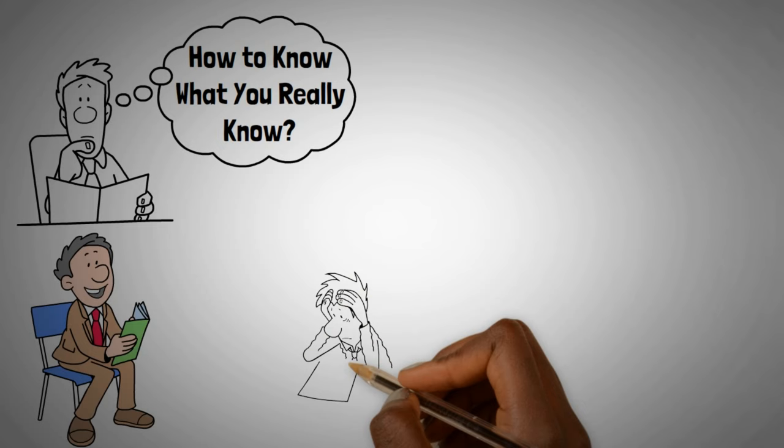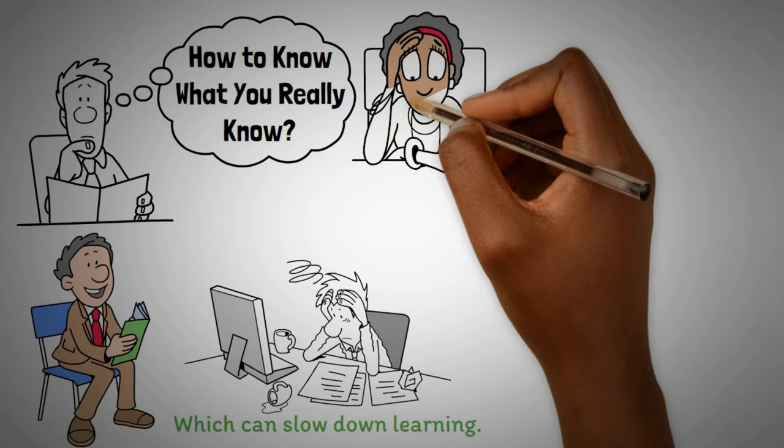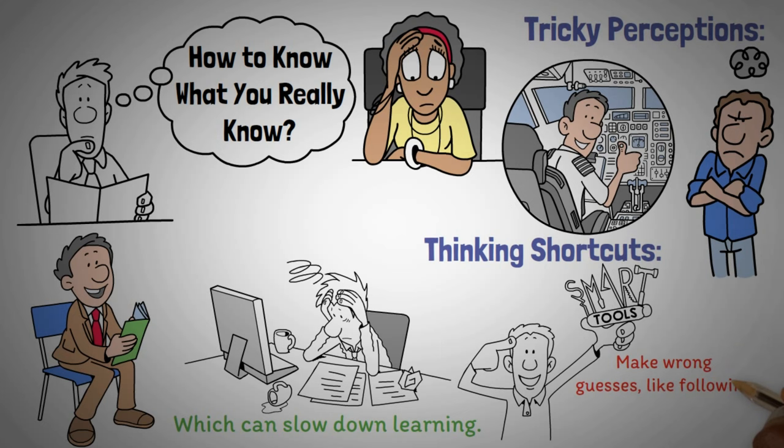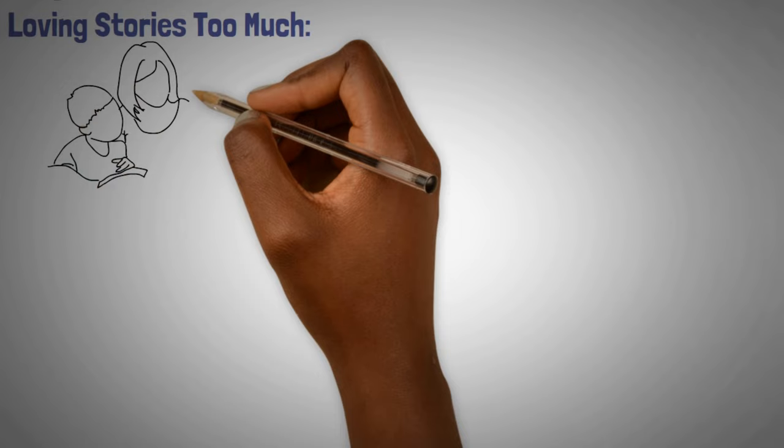Understanding what you know and what you need to work on is key to learning, but people often have a hard time judging their own skills and knowledge which can slow down learning. We misjudge our abilities because of tricky perceptions. Sometimes what we see or hear can fool us, like when pilots think they're flying straight but they're not. Thinking shortcuts. Our brains take shortcuts that can lead us to make wrong guesses, like following the crowd because everyone else does.